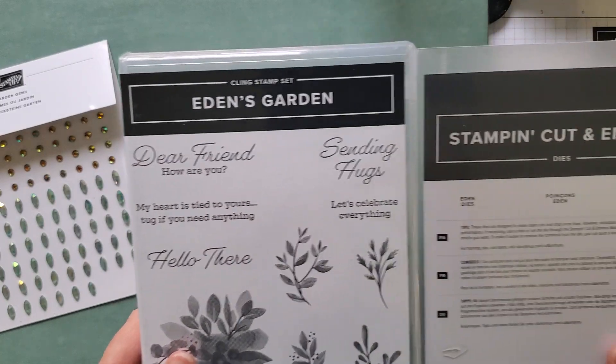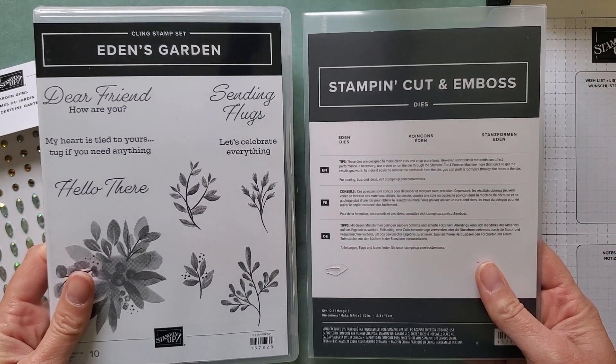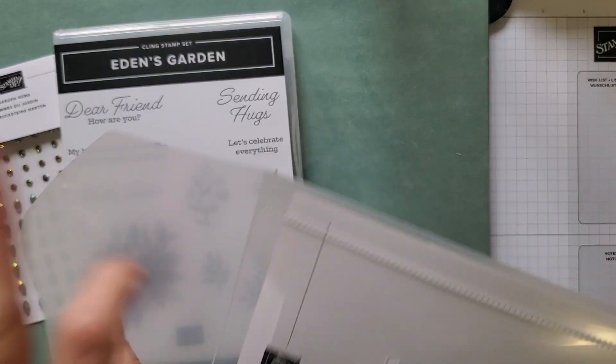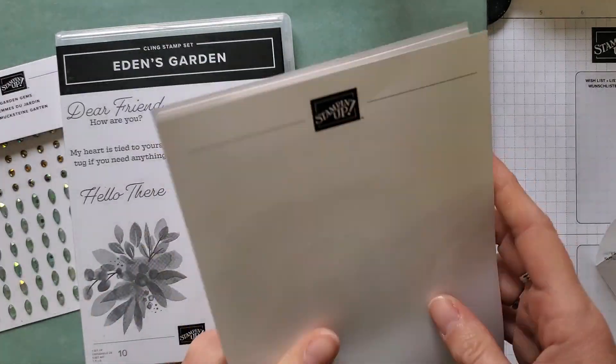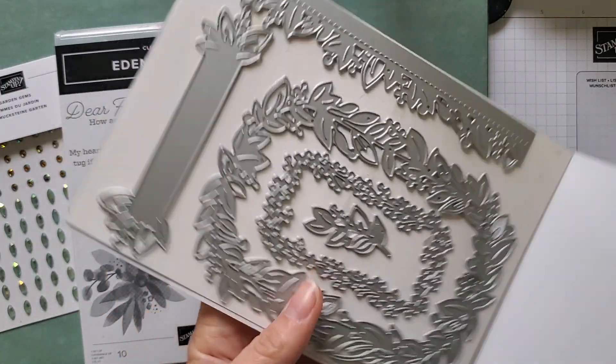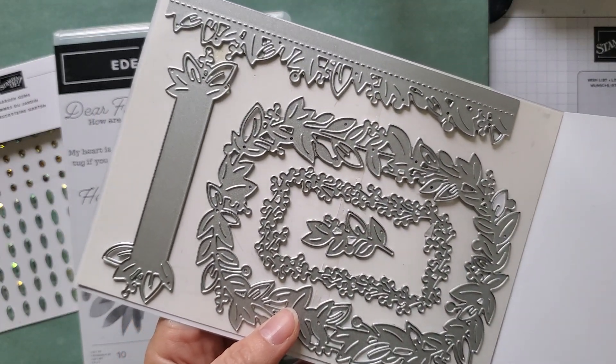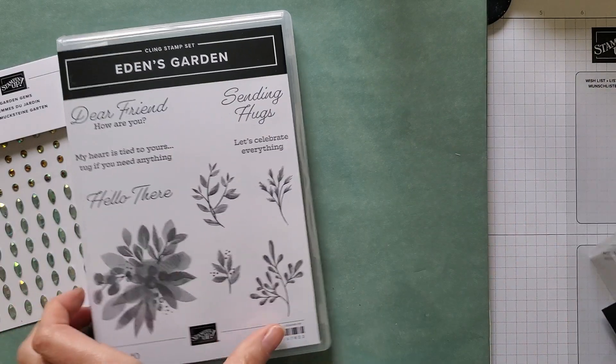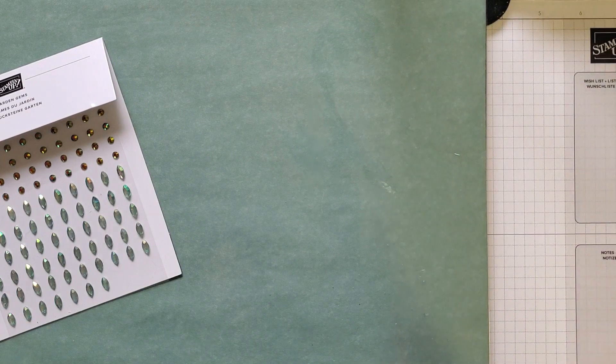So this is the brand new product. This bundle, it's called Eden's Garden, is going to be available in the January through June mini catalog, which comes out in January. And so it's got this beautiful—look at that. Isn't that not gorgeous? Lots of ornate layer kind of dies, which I love. And then the coordinating stamp set, which is beautiful.